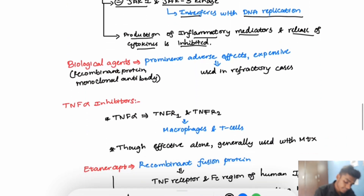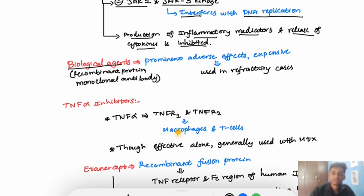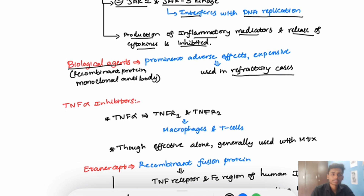Biological agents are usually a recombinant protein or a monoclonal antibody. They are not routinely used; they are used only in refractory cases because they have very prominent adverse effects and are expensive.